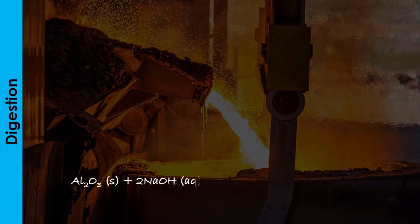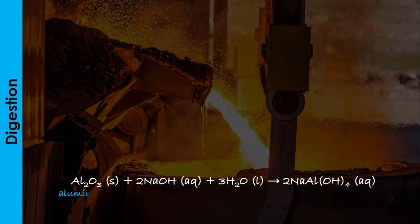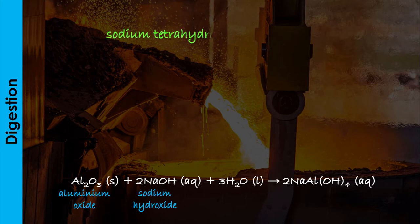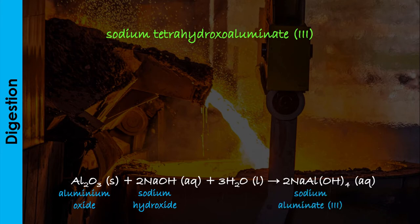In the first stage of the process, the bauxite is digested or dissolved in hot concentrated sodium hydroxide or caustic soda solution to yield sodium tetrahydroxyl aluminate(III) or sodium aluminate(III).